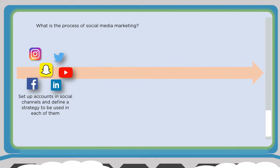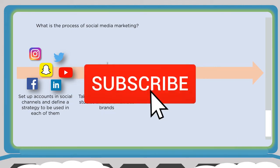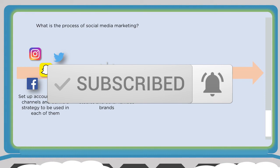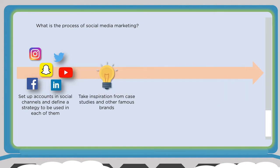Take inspiration from case studies and famous brands — continue to learn. Most big, medium, and smaller companies that have performed well are out on social media. Look at companies that inspire you, companies in your industry, or your competitors to see what they're posting and what engagement they're getting. Create a social media content calendar — this isn't the end of the process, it loops back to the beginning.